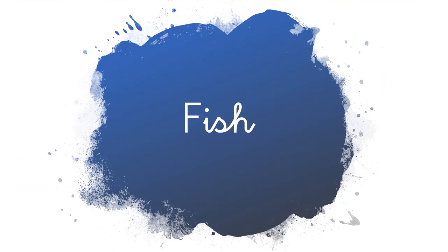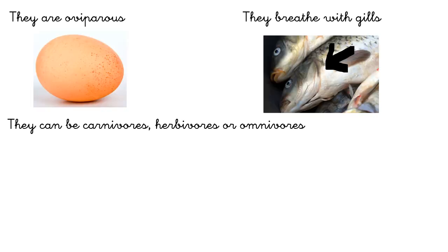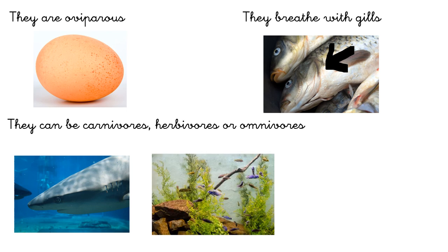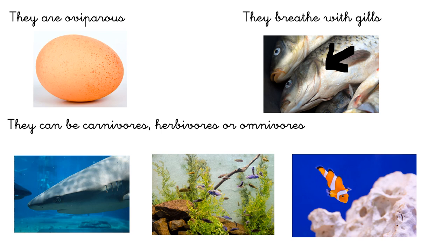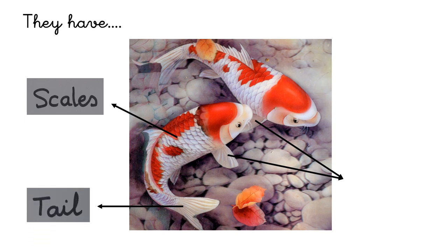Fish. Fish are oviparous, they are born from an egg. They breathe with gills, and they can be carnivores if they eat animals, herbivores if they eat plants, and omnivores if they eat animals and plants. They have scales, a tail, and fins.